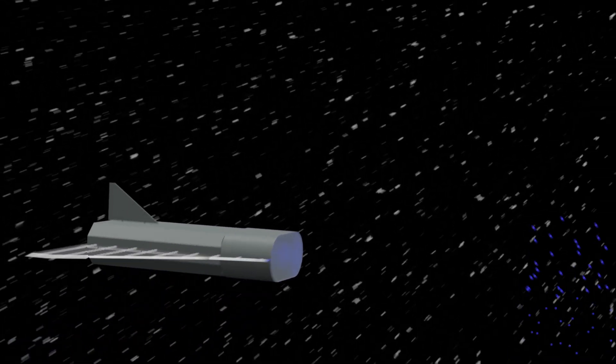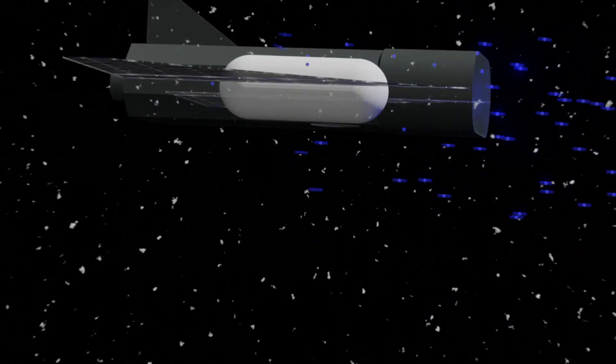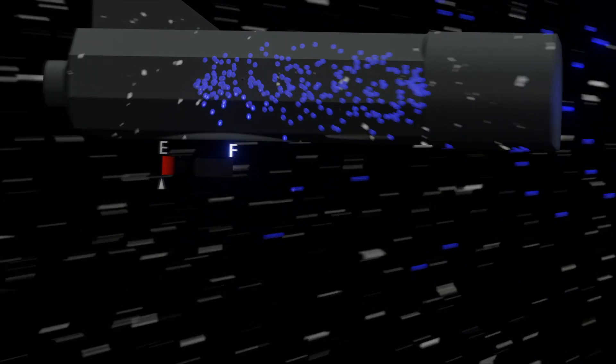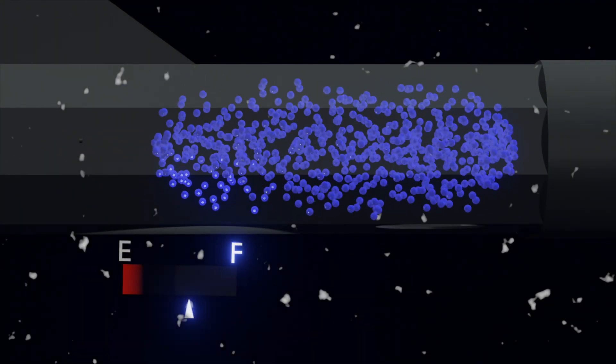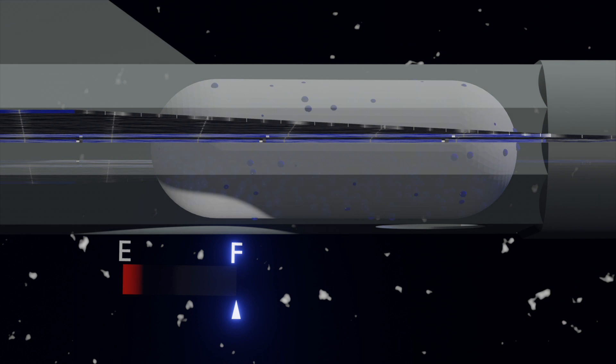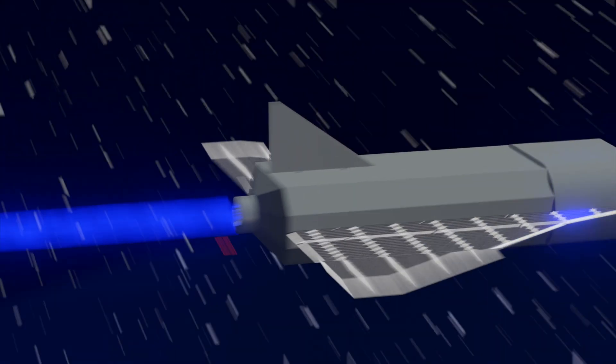That can collect the atmosphere you're flying through, use that and feed it to your electric thruster. All of a sudden, if you're flying low in very low earth orbit, you can collect that atmosphere indefinitely.